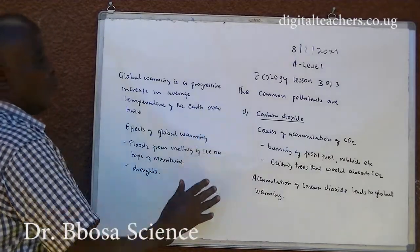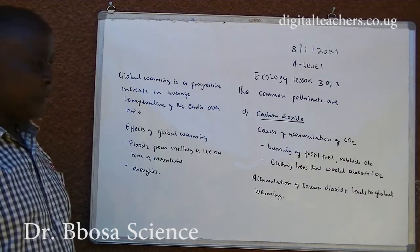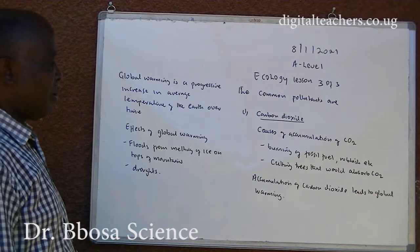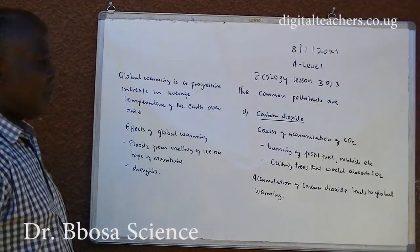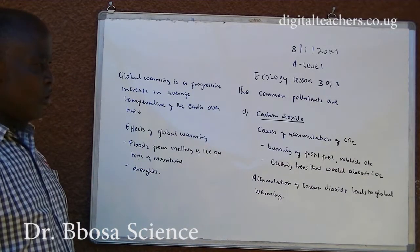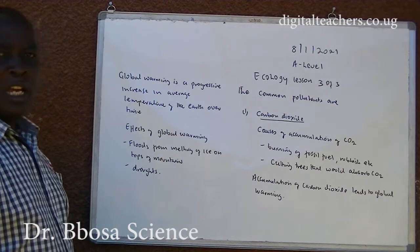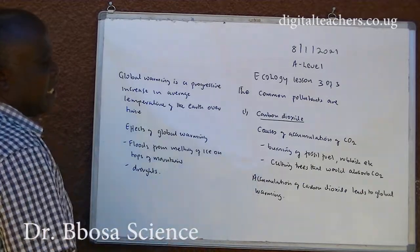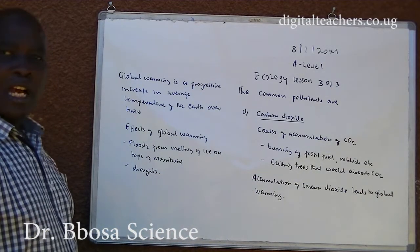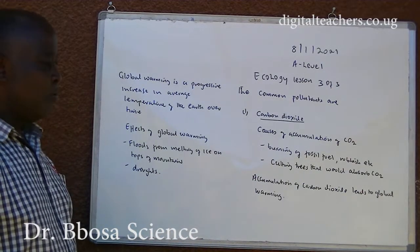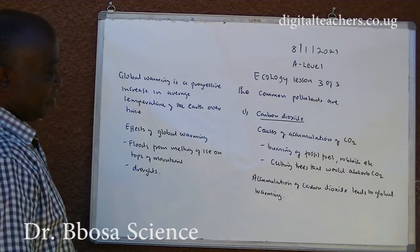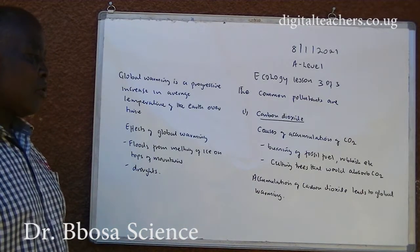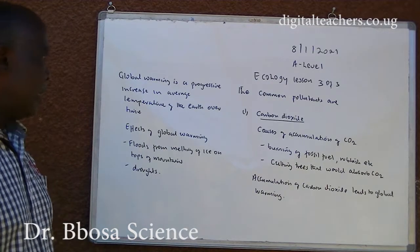One: carbon dioxide. The causes of accumulation of carbon dioxide include burning fossil fuels, rubbish, and so on, and cutting down trees that would otherwise absorb carbon dioxide.